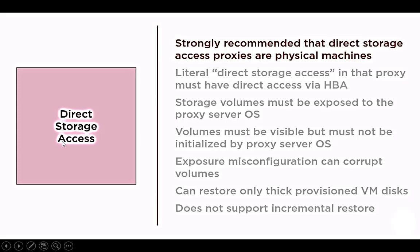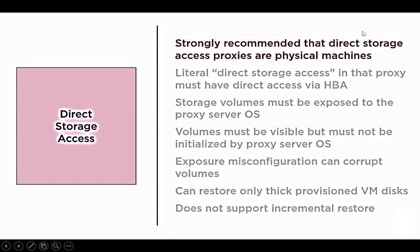The first is Direct Storage mode. This mode strongly recommends that direct storage access proxies be physical machines — we always choose a physical machine, not a virtual machine. The physical machine is directly connected to storage like a SAN or other storage area network. It is the fastest method among all three. The proxy must have direct access via an HBA card — Host Bus Adapter — which is used with fiber optic connections. The storage volume must be exposed to the proxy server.